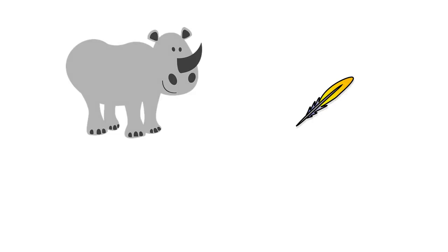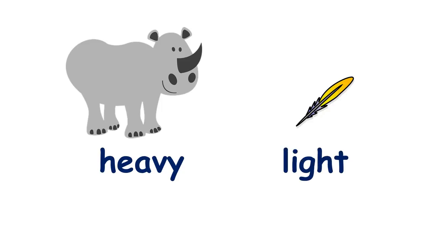Here we have a rhino and a feather. We can say that the rhino is heavy — you'd find it very difficult to pick up a rhino. And what can we say about the feather? We can say that the feather is light.